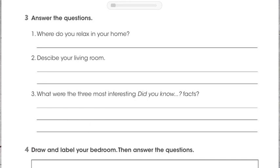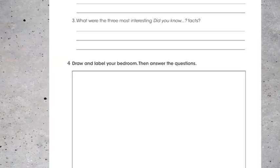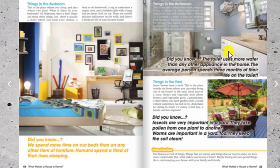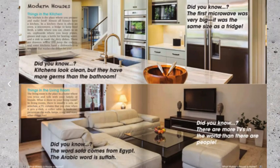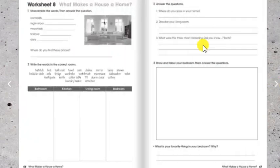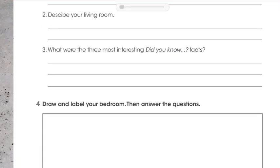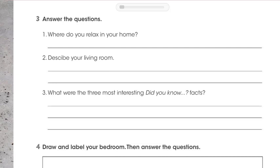Let me show you — those 'did you know' facts are here. Look, there are several: here, here, here, and over here too. There are many 'did you know' facts — which one caught your attention the most? Then you write one of them in number three. For example, for question one — where do you relax in your home? — I relax in my living room. I'll put 'living room.' Maybe for you it's somewhere else, so answer accordingly.